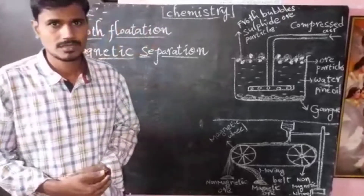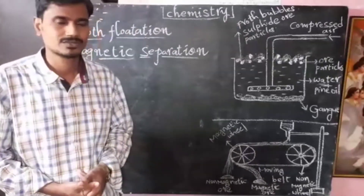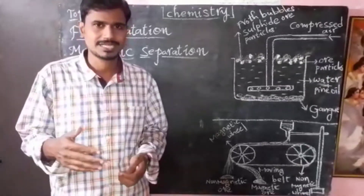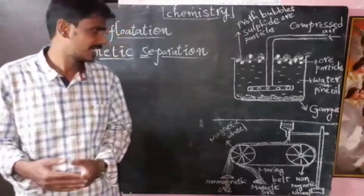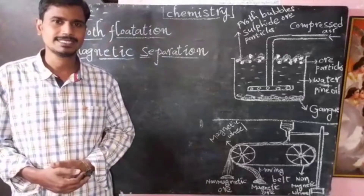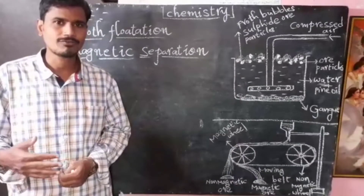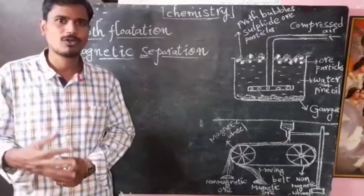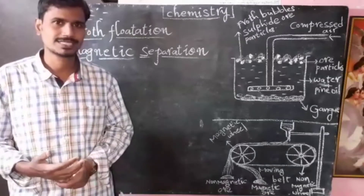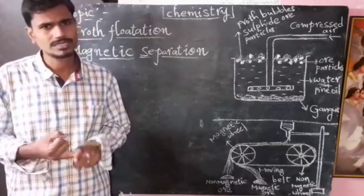In the last class we also discussed about concentration or dressing. Ore which is available in the earth's crust contains some impurities like sand and clay, which are called gangue (G-A-N-G-U-E). To get rid of unwanted rocky material from the ore we follow some physical methods. Two methods we discussed previously were hand picking and washing.